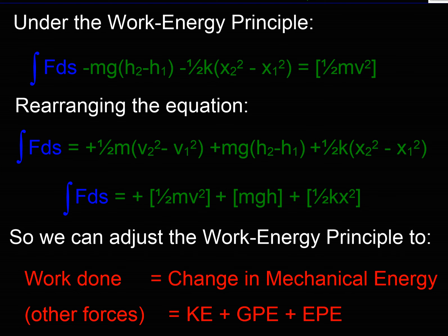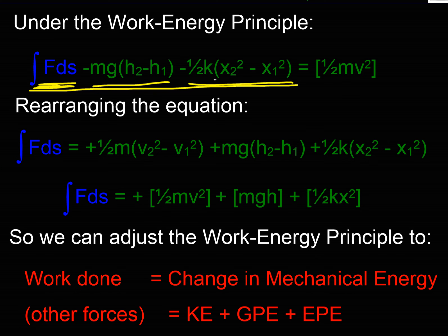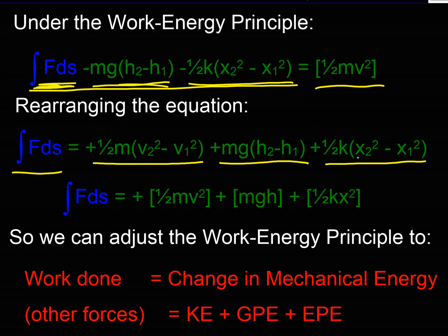If I now substitute that into the work done side of my work-energy principle, I've got the work done by my external force, my change in gravitational potential energy, my change in elastic potential energy, and on the right-hand side my change in kinetic energy. I could rearrange that so I have my external force on the left-hand side and move my potential energies to the other side. So I've got my change in half mv² (kinetic energy), my gravitational potential energy (now positive), and my change in elastic potential energy (also positive).